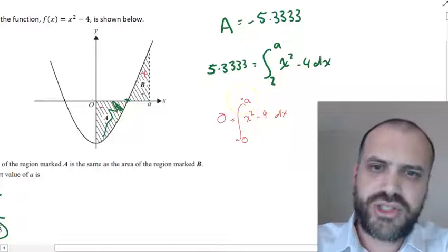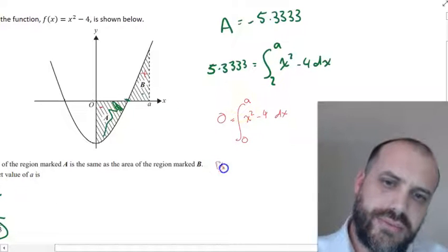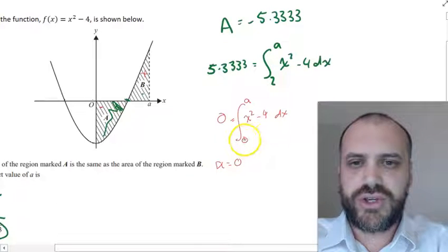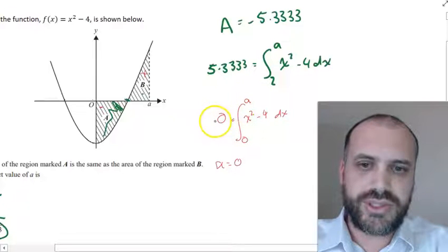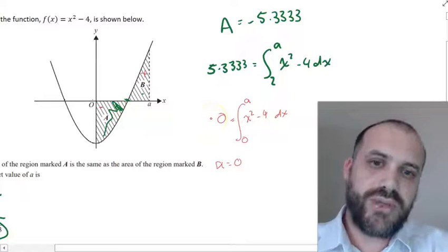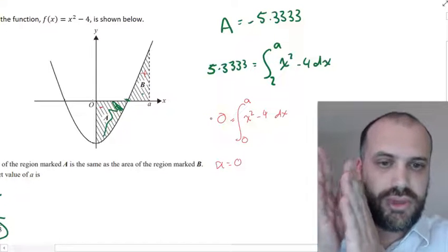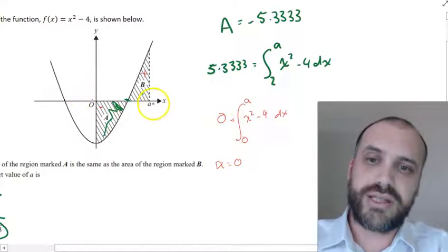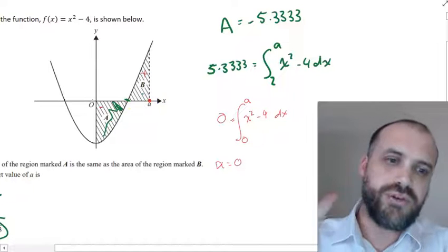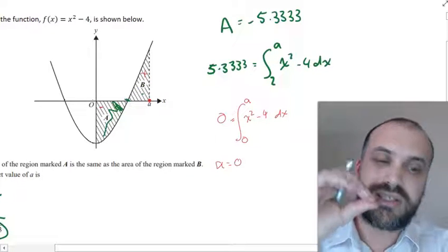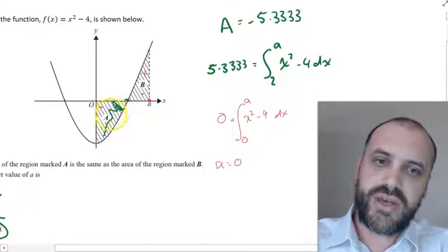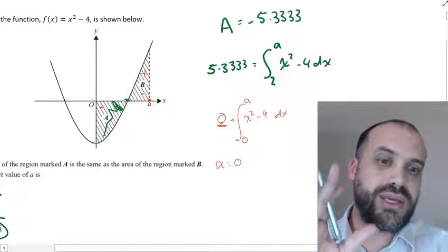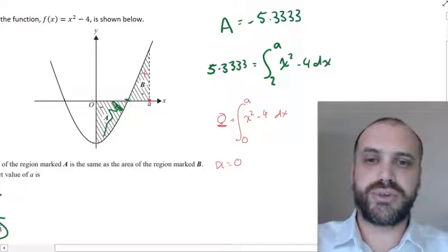So if you solve F of X between 0 and A, and F of X in this case is X squared minus 4, you should be able to come to that A value. Now you need to be a little bit circumspect here because if you just try to solve that using NSolve on a TI, it's just going to give you an answer of A equals 0. But there's also another answer here.